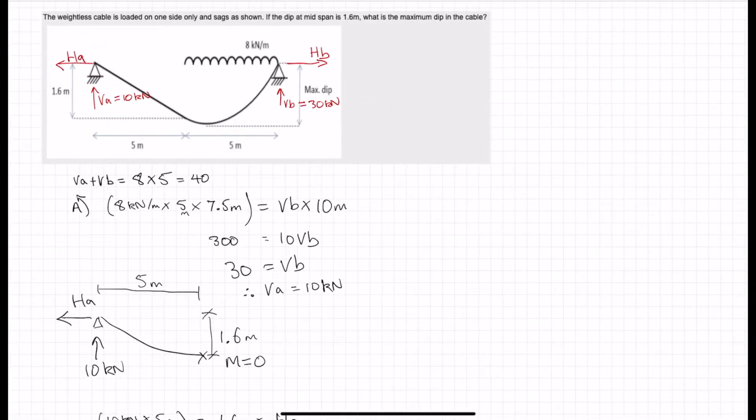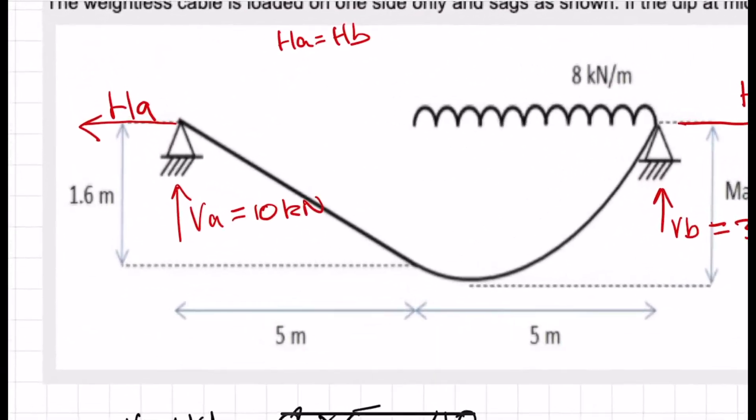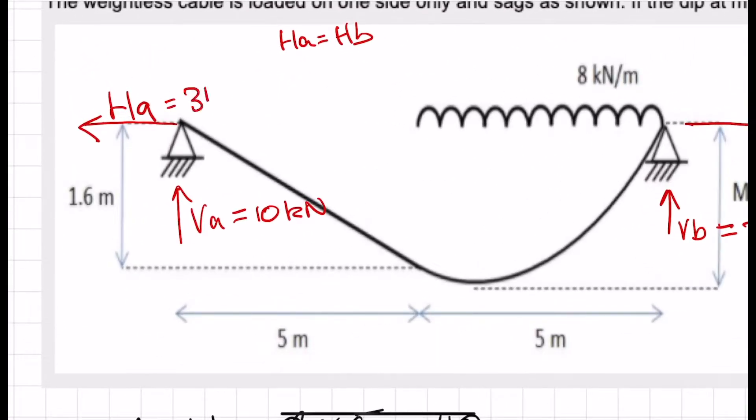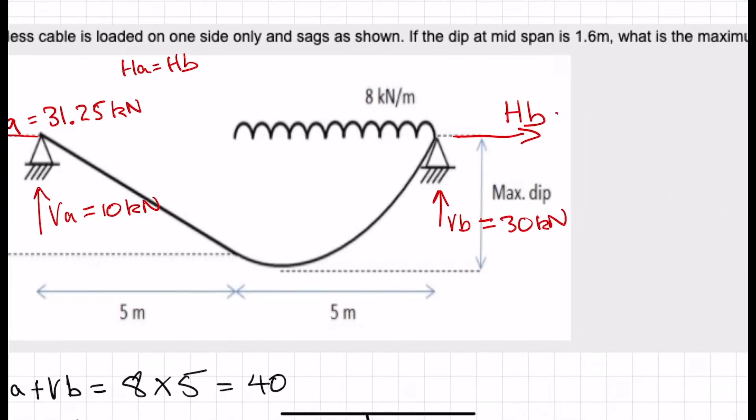And because these are the only two horizontal forces, they are equal to each other. HA is equal to HB. And that was 31.25.